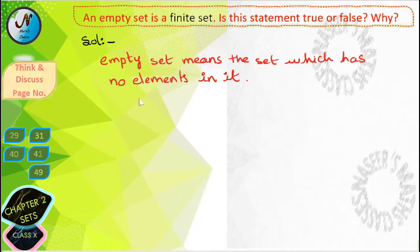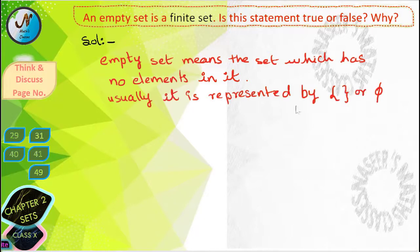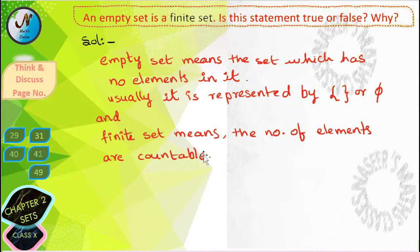So we already know that empty set means the set which has no elements in it. Usually it is represented by curly braces without any element or symbolically it is denoted by phi.